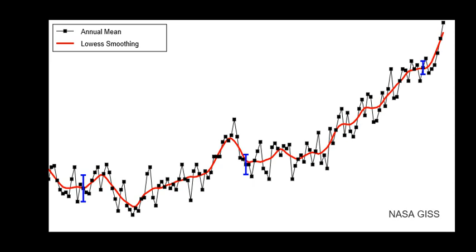The history of the scientific discovery of climate change began in the early 19th century when ice ages and other natural changes in paleoclimate were first suspected and the natural greenhouse effect first identified. In the late 19th century, scientists first argued that human emissions of greenhouse gases could change the climate. Many other theories of climate change were advanced, involving forces from volcanism to solar variation. In the 1960s, the warming effect of carbon dioxide gas became increasingly convincing.